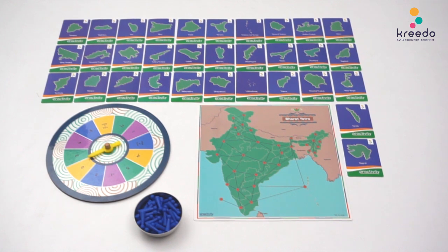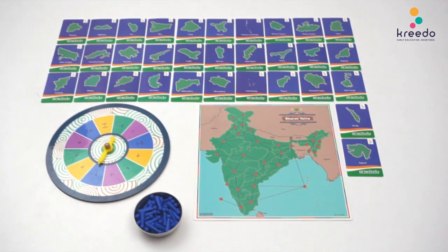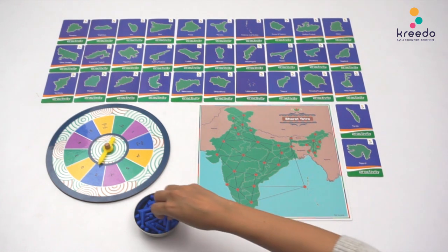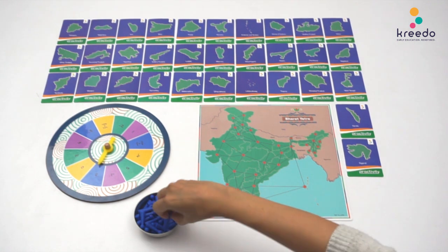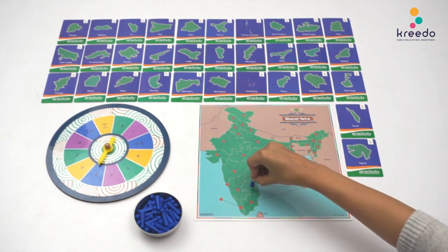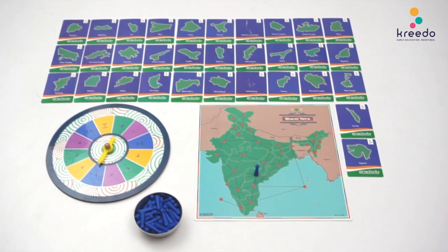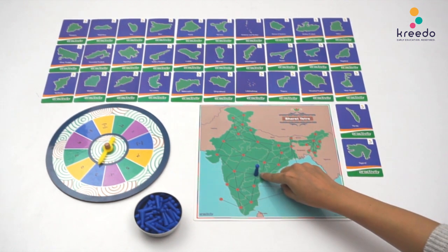Spin the roulette. Tell the child to count as they move the skittle in the direction based on the number the roulette landed on. Point to the state on which the child has placed the skittle and ask the child: what state is this?